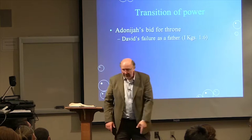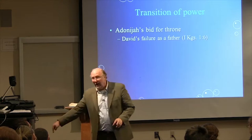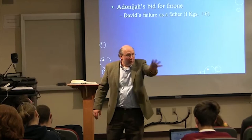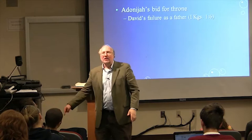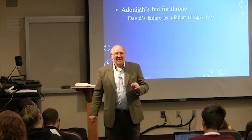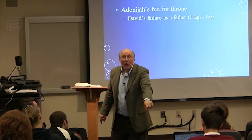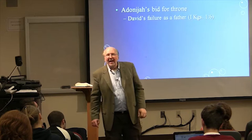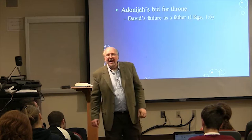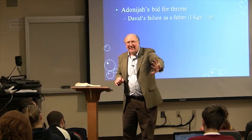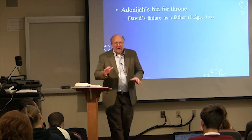There are two springs. One is called Ein Rogel — Ein means spring. Adonijah comes from Jerusalem with his boys, gets his chariots, and comes down to Ein Rogel to announce himself king. David takes Solomon to the other spring, the Gihon spring, which is closer to the city — that's where Hezekiah's tunnel is. David is going to announce Solomon right next to the city, while Adonijah is more outside. The geography works in Solomon's favor.